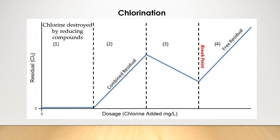As you keep pumping more chlorine into the water, you move into Stage 2. Here you have the formation of what's called chlororganics and chloramines — chemicals formed when chlorine reacts with things like organics and ammonia in the water. The blue line is now trending upwards, meaning we have chlorine residual in the water, but it's in the combined state. Combined chlorine residual is chlorine that has attached itself to something else like ammonia, and it is not as effective as free chlorine residual, which is what you want.